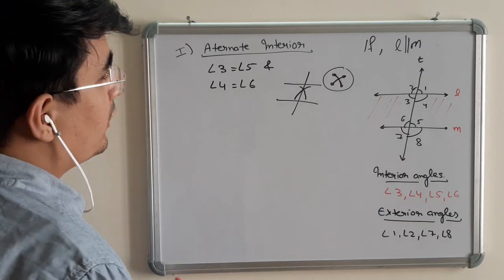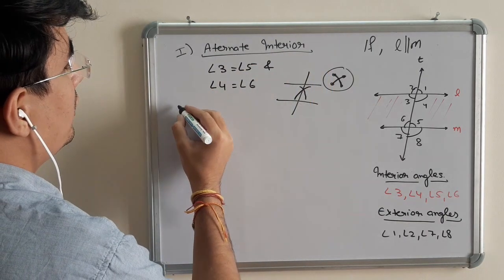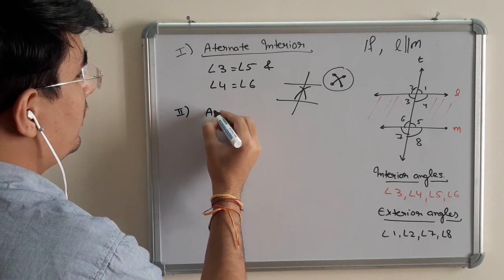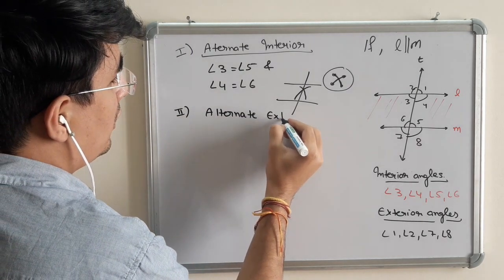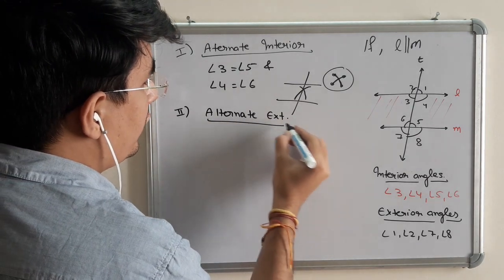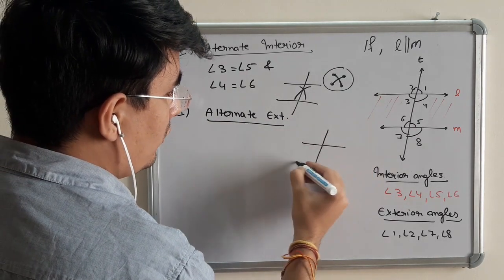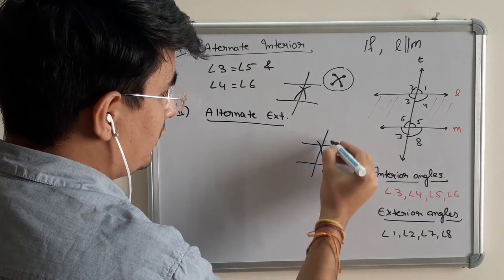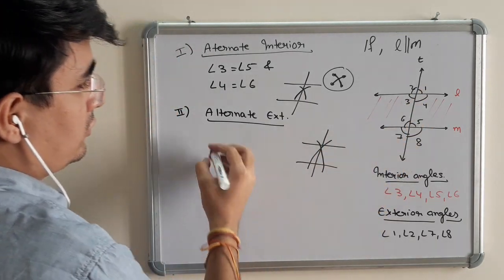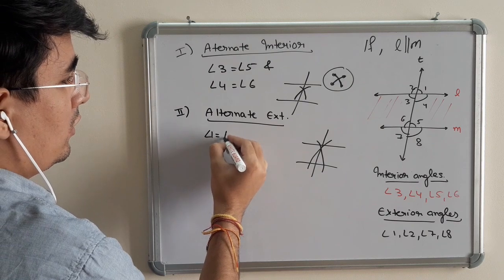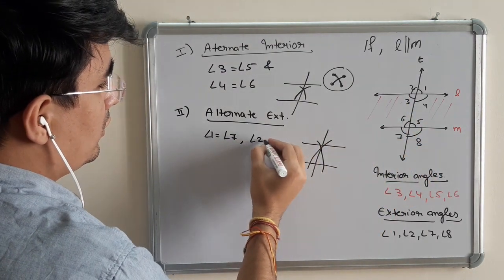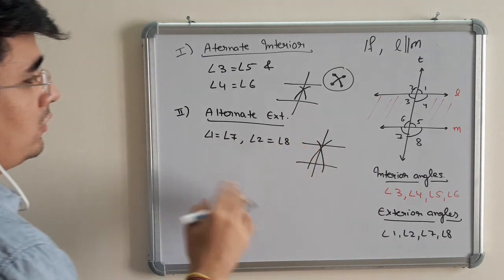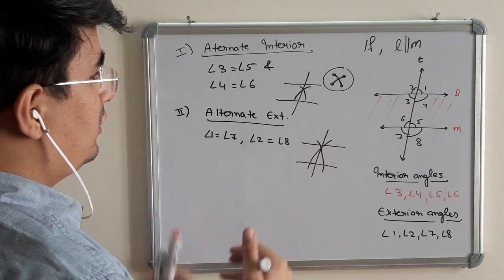Now, similarly, if I talk about alternate interior, second would be alternate exterior. So, in case of alternate exterior, draw the same way. Just do the alteration like this. So, 1 is equal to 7. And 2 is equal to 8. This is alternate interior and exterior angles.